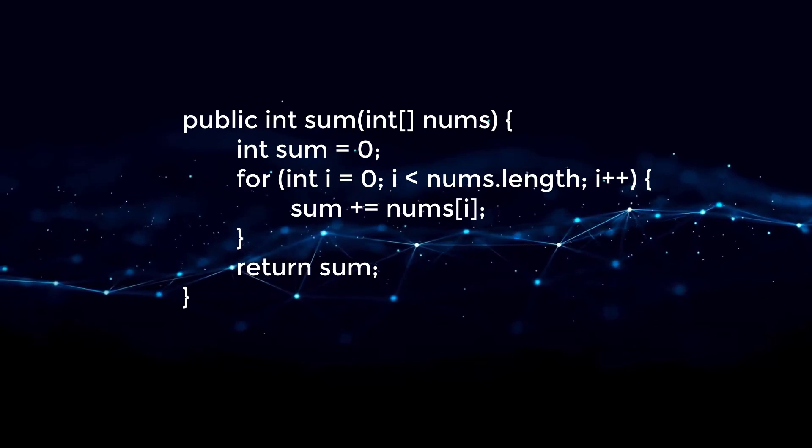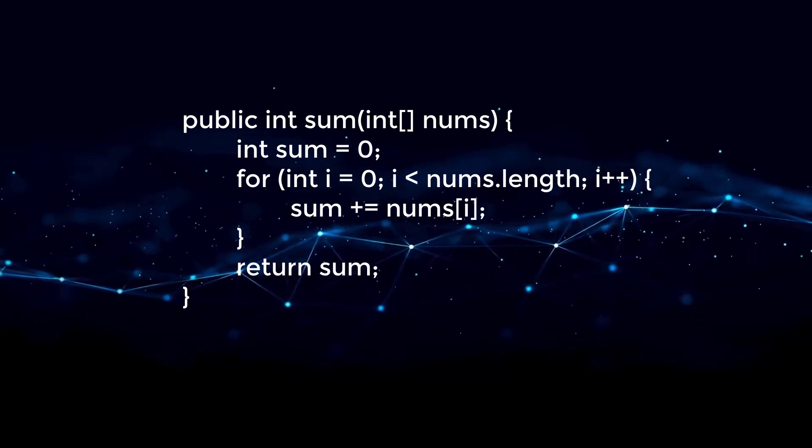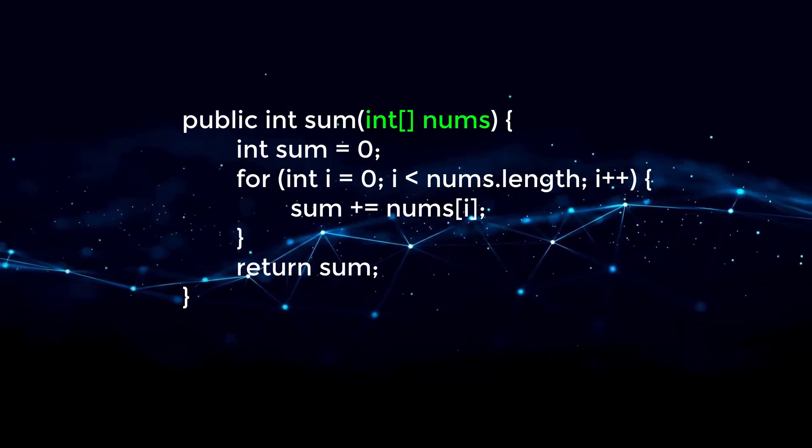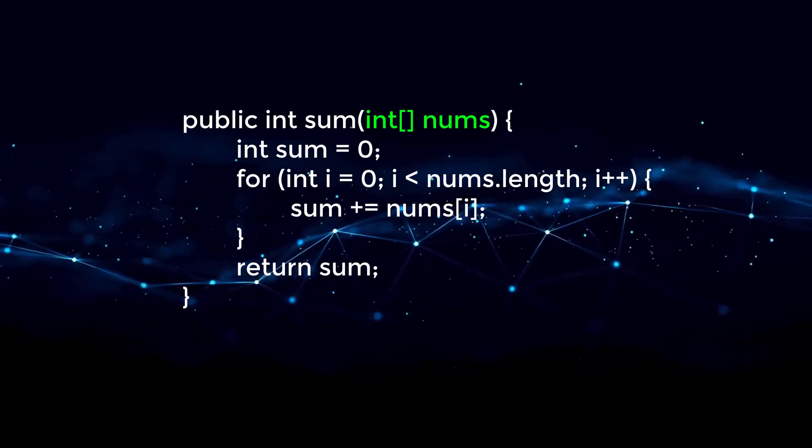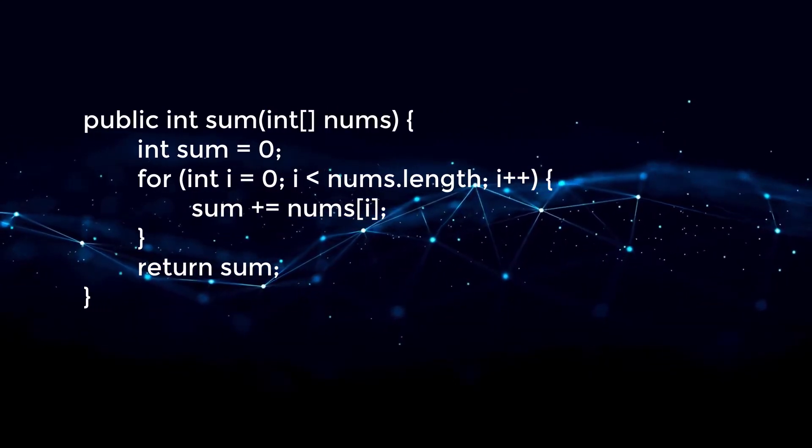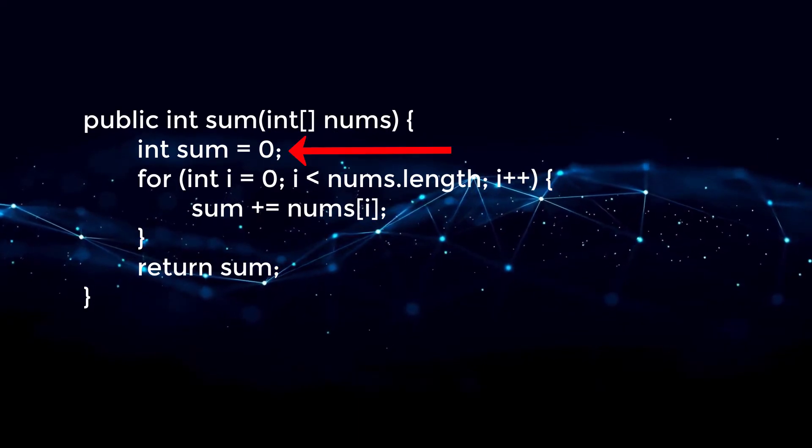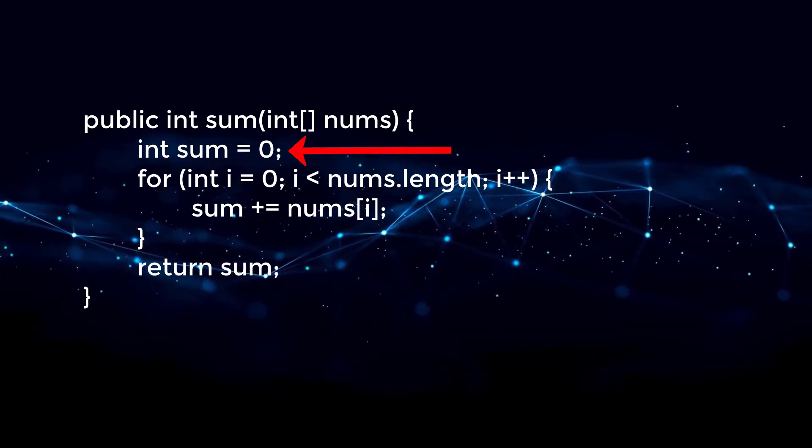So let's look at another example, but instead of adding two numbers, we are adding all of the numbers inside of an array that is given to us in our input. Just like before, we're going to take it line by line. So the first line, we are initializing a variable to zero.